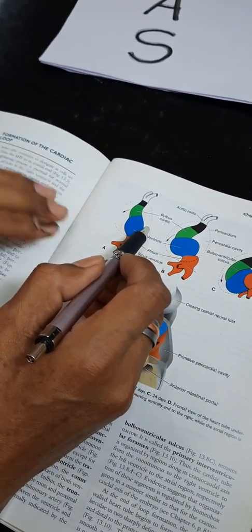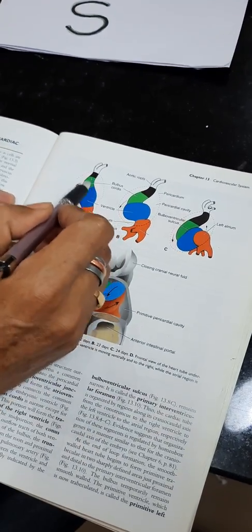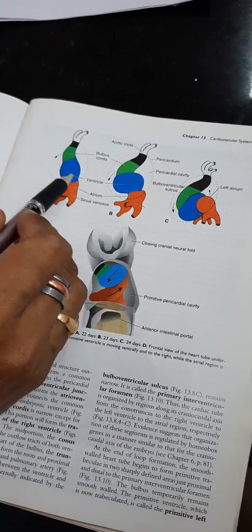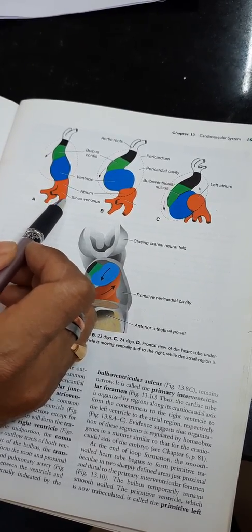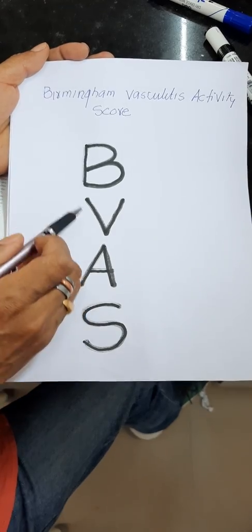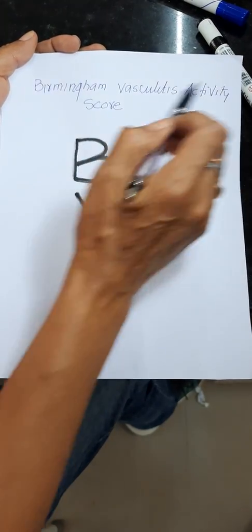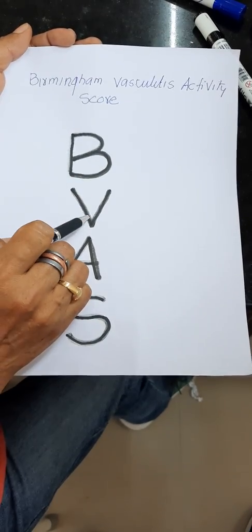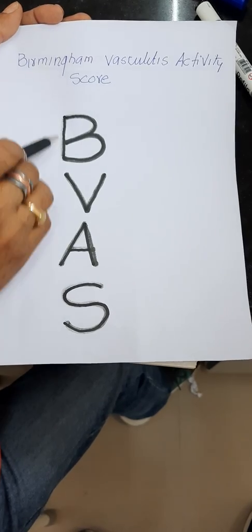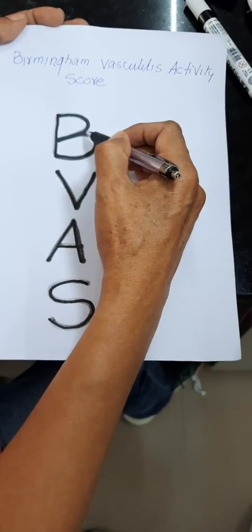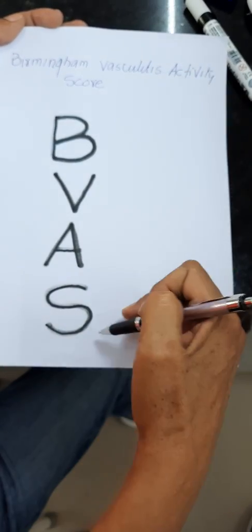Now come to this diagram. This is the fusion of the right and left sided endocardial tubes. Here you see this is the fused heart tube. After fusion, there are four basic parts: bulbus cordis, ventricle, atrium, and sinus venosus. I have made a mnemonic — this is called BVAS. BVAS means bulbus cordis, ventricle, atrium, and sinus venosus. This is the direction of fusion — first bulbus cordis, then ventricle, then atrium, then sinus venosus.